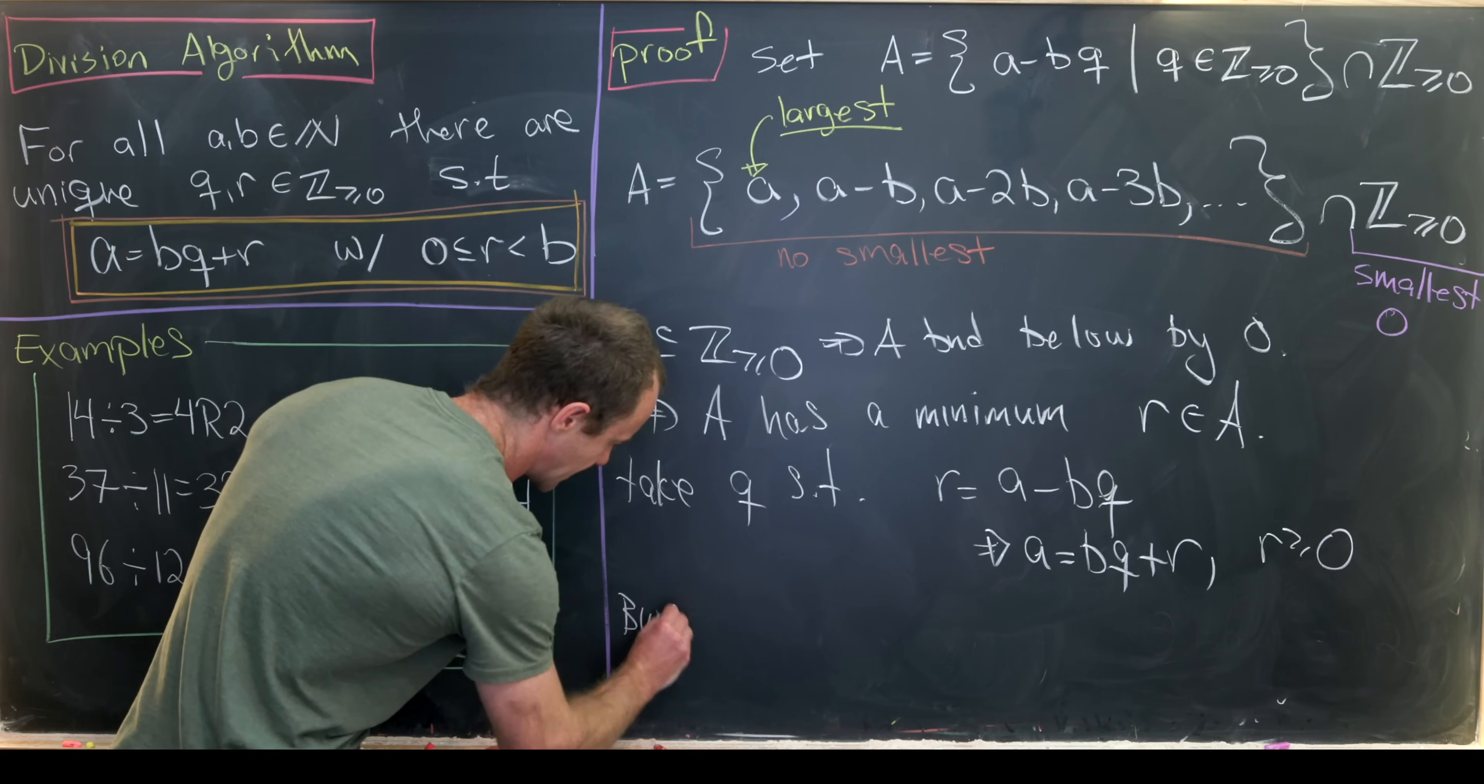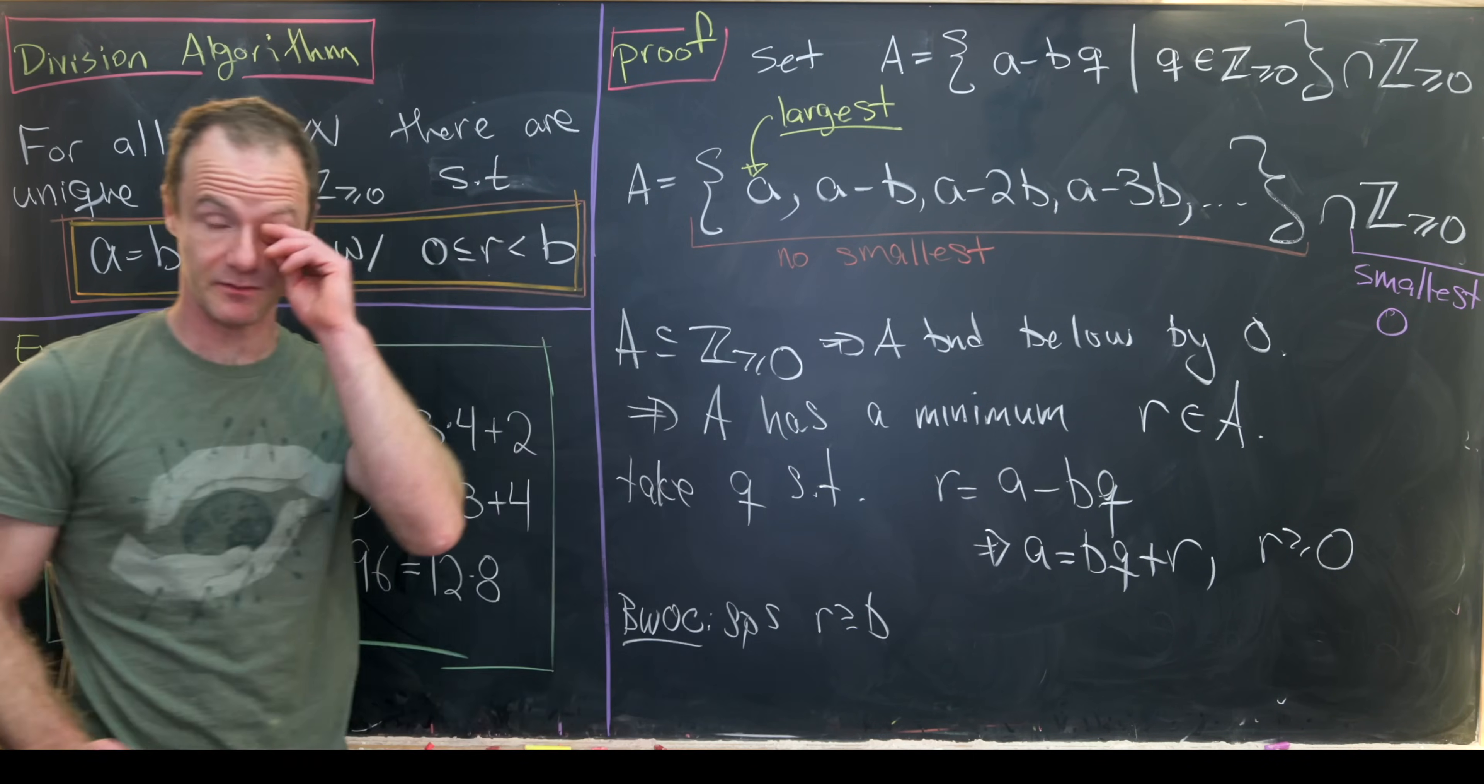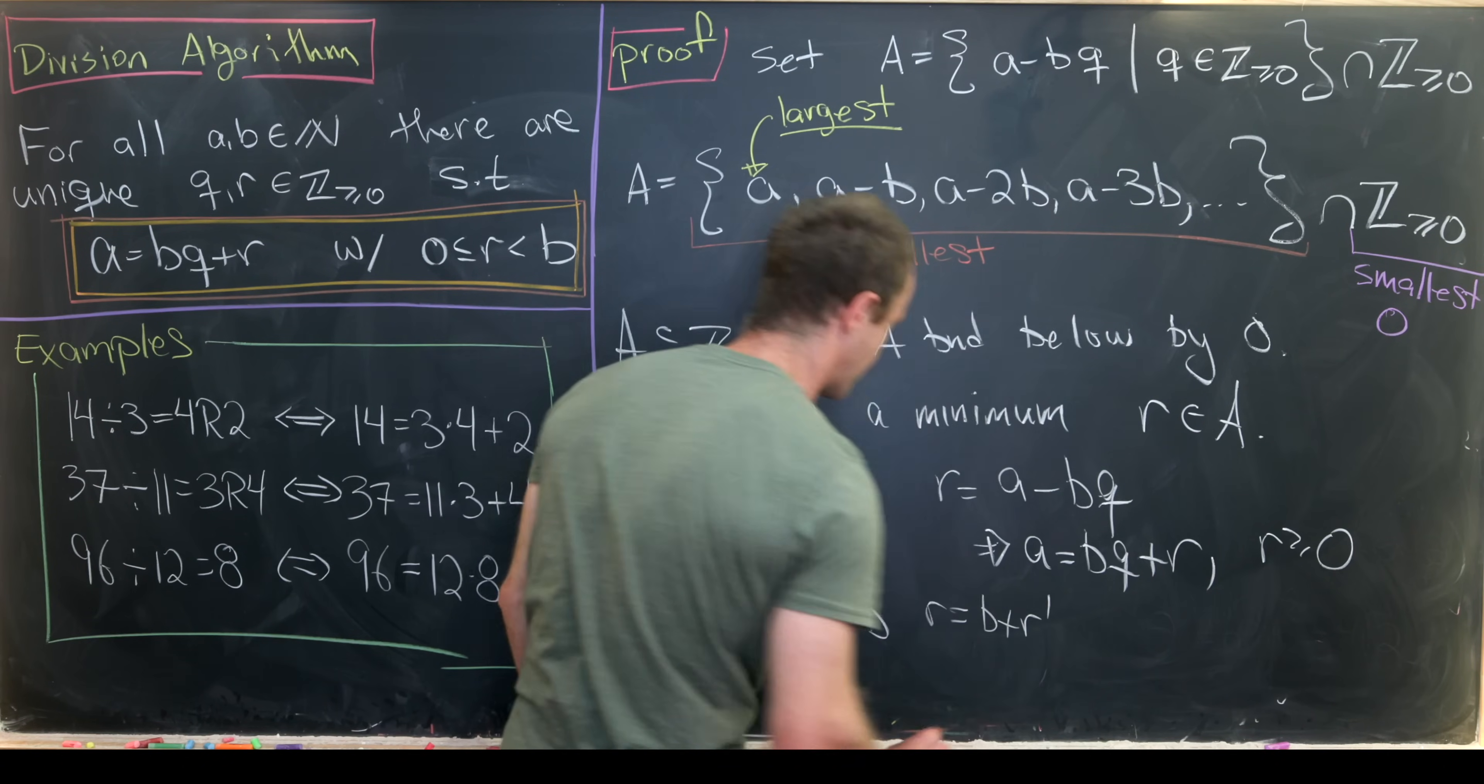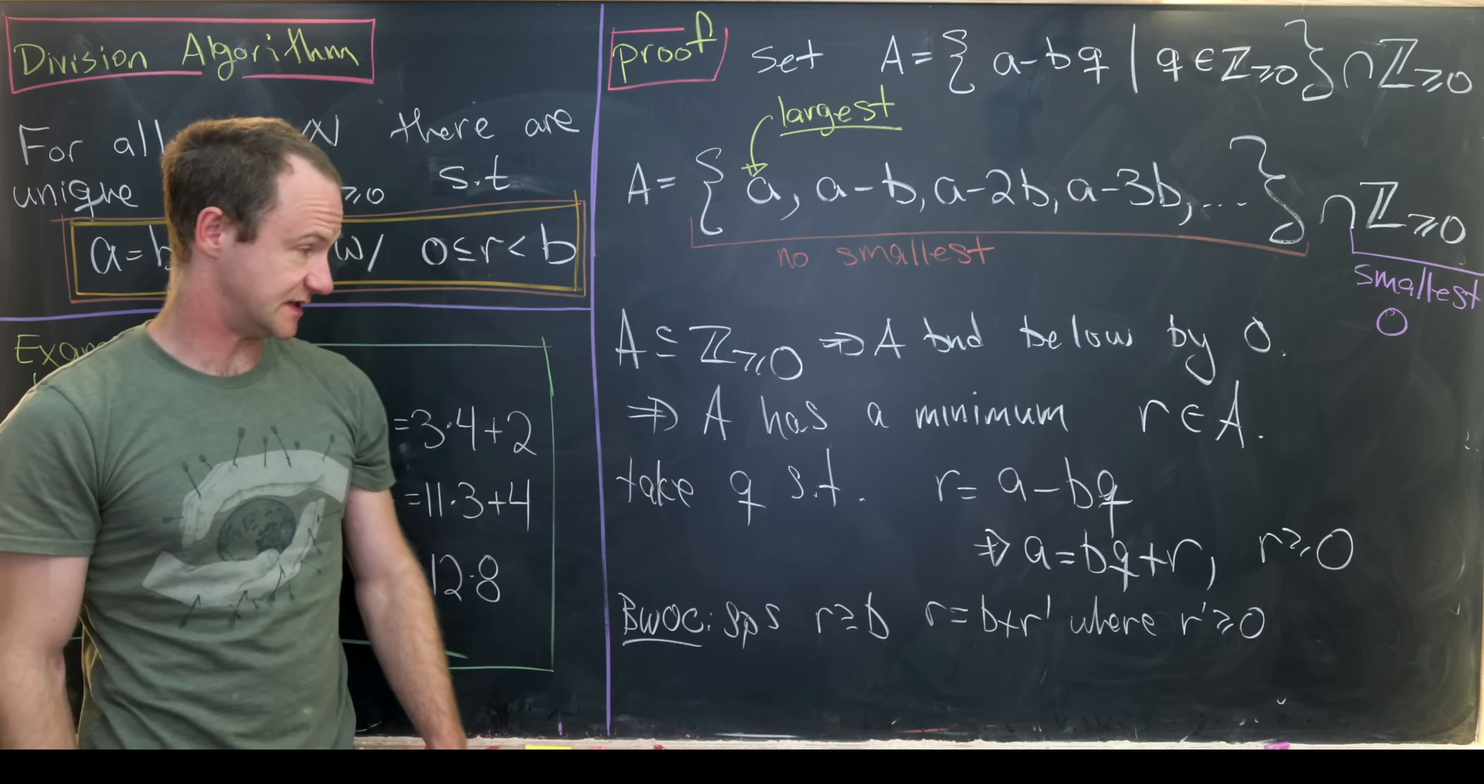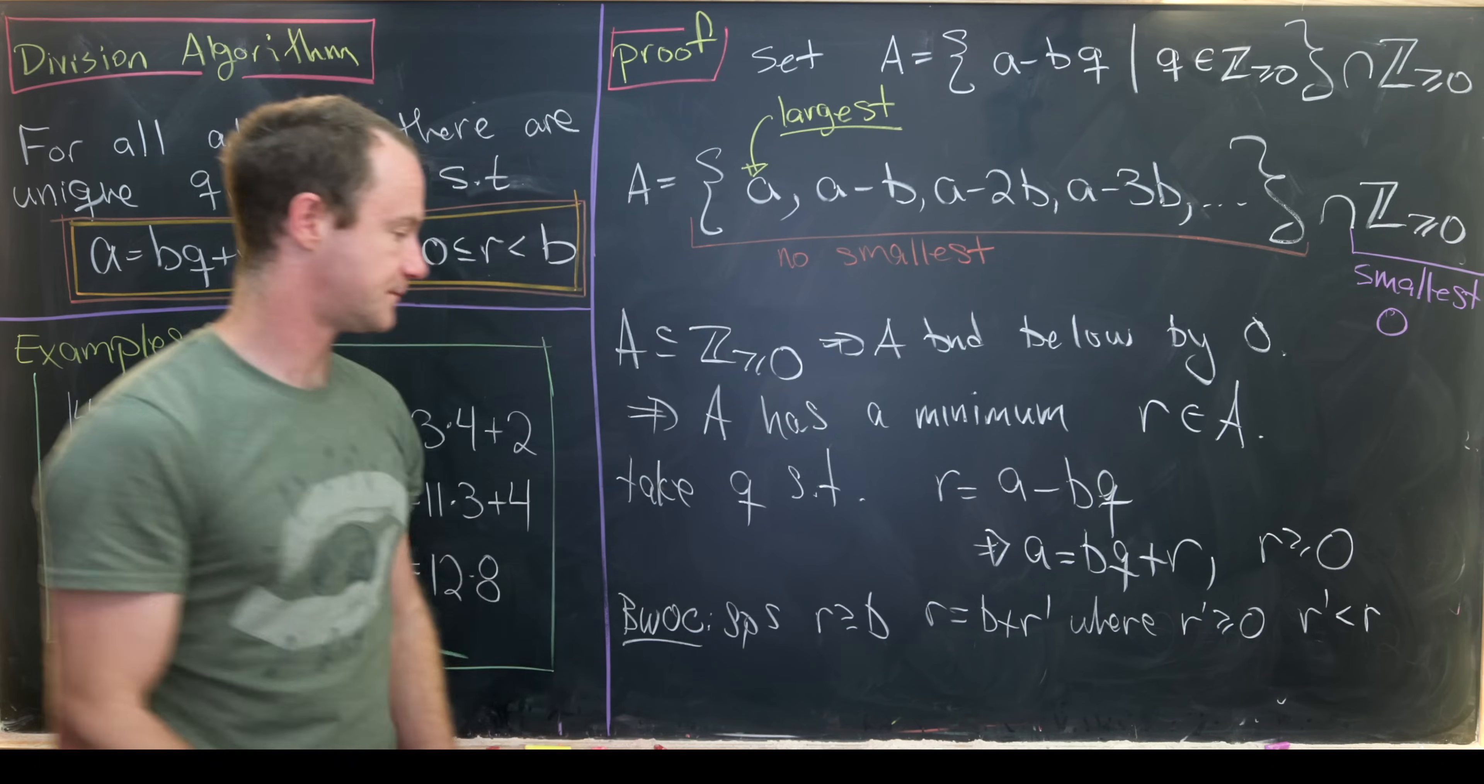Now we have to show that r is also strictly less than b. And so let's do that by way of contradiction. So by way of contradiction, let's suppose that r is bigger than or equal to b. And then we can write r as maybe b plus r prime, where r prime is bigger than or equal to 0. And I guess maybe clearly r prime is less than r.